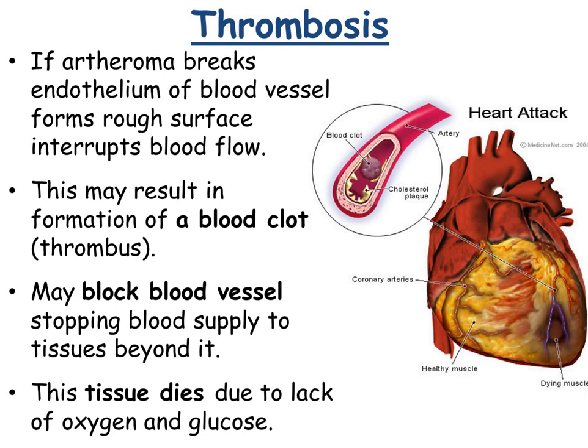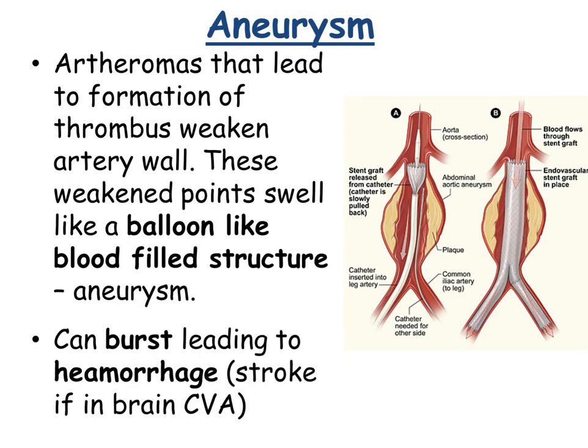Thrombosis is a blood clot caused by rupture of the endothelium. The atheromas that lead to the formation of a thrombus can also weaken the artery wall. These weakened points of the wall swell up into a balloon-like, blood-filled structure called an aneurysm. This could actually burst, leading to a haemorrhage. If it were an artery in the brain, that would cause a stroke, but aneurysms can also occur in the heart.